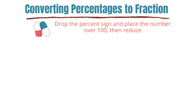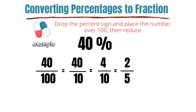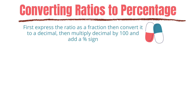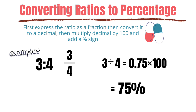Next is converting percentage to fraction — drop the percent sign, place the number over 100, then reduce. Last is converting ratio to percentage — express the ratio as a fraction, convert it to a decimal, multiply the decimal by 100, and add a percent sign.